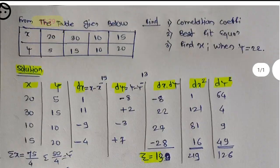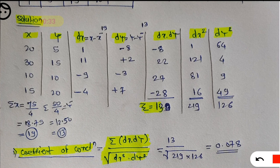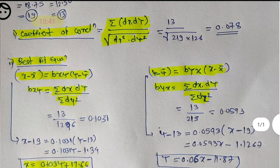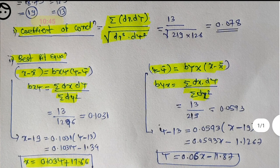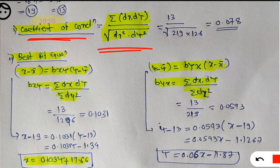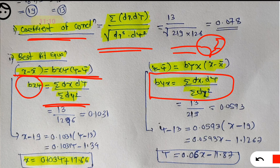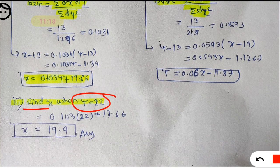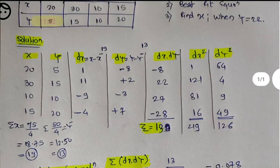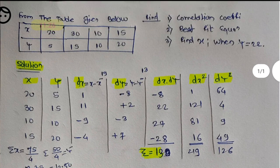To recap the steps to follow: for coefficient of correlation or regression, draw a table with columns x, y, dx, dy, dx·dy, dx square, and dy square. Remember the three important formulas: coefficient of correlation r equals summation of dx·dy divided by square root of (dx square times dy square); coefficient of determination is r square; and the line equations using b(xy) and b(yx). In this way you can solve problems based on coefficient of correlation and regression.